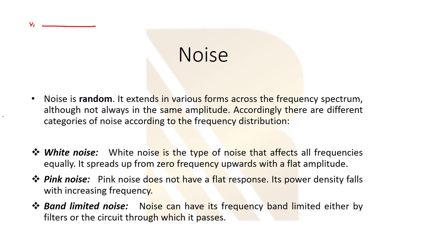This is the difference between a normal DC voltage or a voltage which is changing in a defined way, for example a sine wave. That voltage is changing, but it has a specific amplitude 'a' that is constant. Noise, by contrast, is exactly like a voltage or current, but this time the amplitude is changing randomly — we can't predict it. Noise extends in various forms across the frequency spectrum, not always at the same amplitude, and its amplitude doesn't follow any pattern.